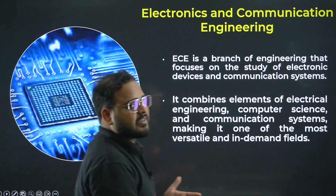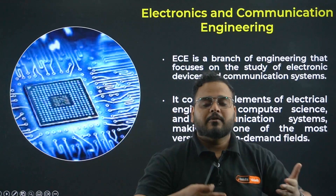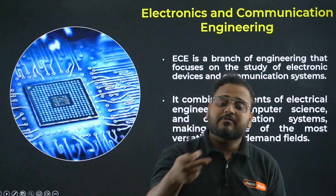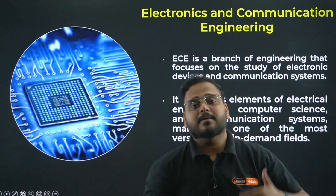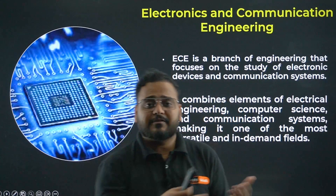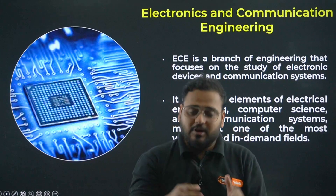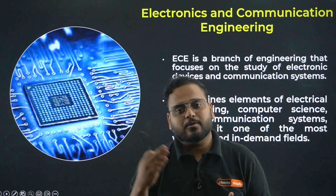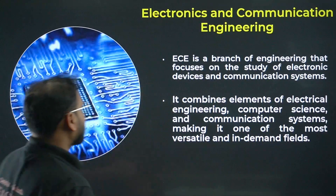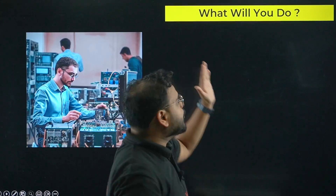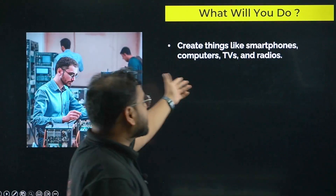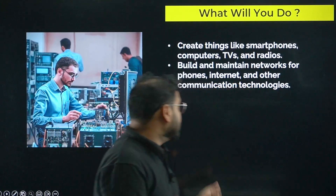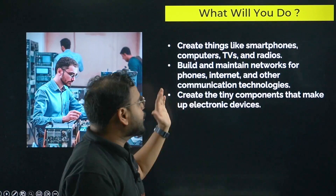You can see there are a lot of devices around us — in the healthcare industry, for example, if somebody loses a hand in war, robotics helps give them a prosthetic arm. The simplest device you use most of the time is a smartphone, which is a product of very high-level ECE engineering. In this stream you'll create things like smartphones, computers, TVs, and radios, and build and maintain networks for phones, internet, and other communication technologies.